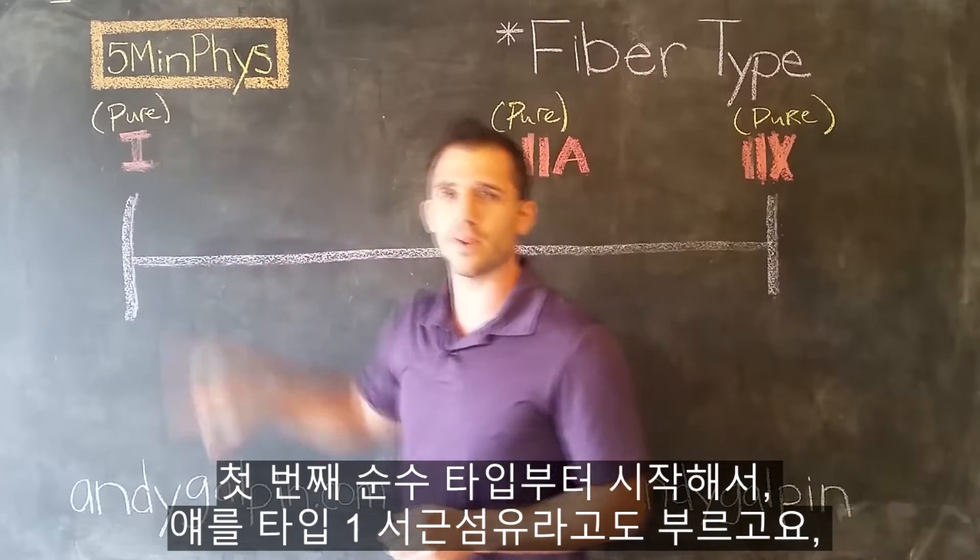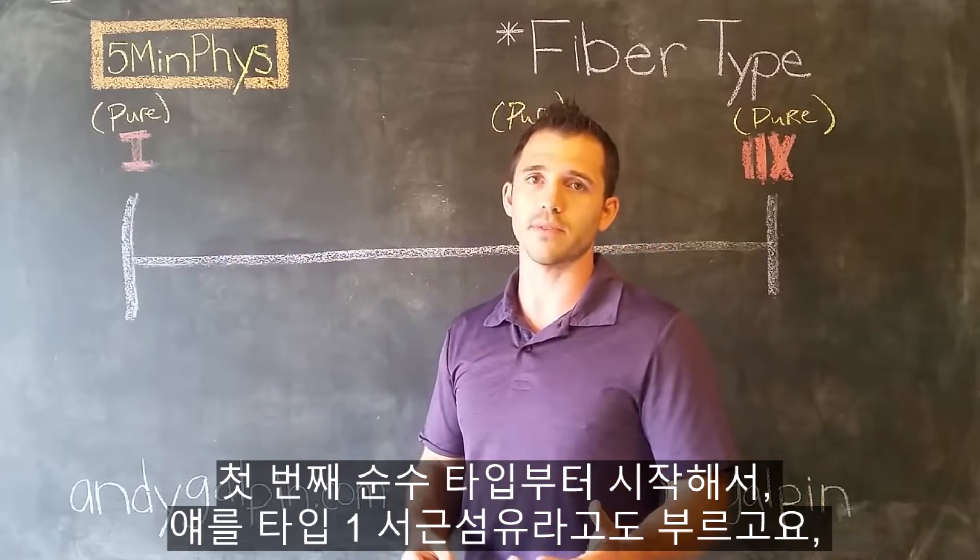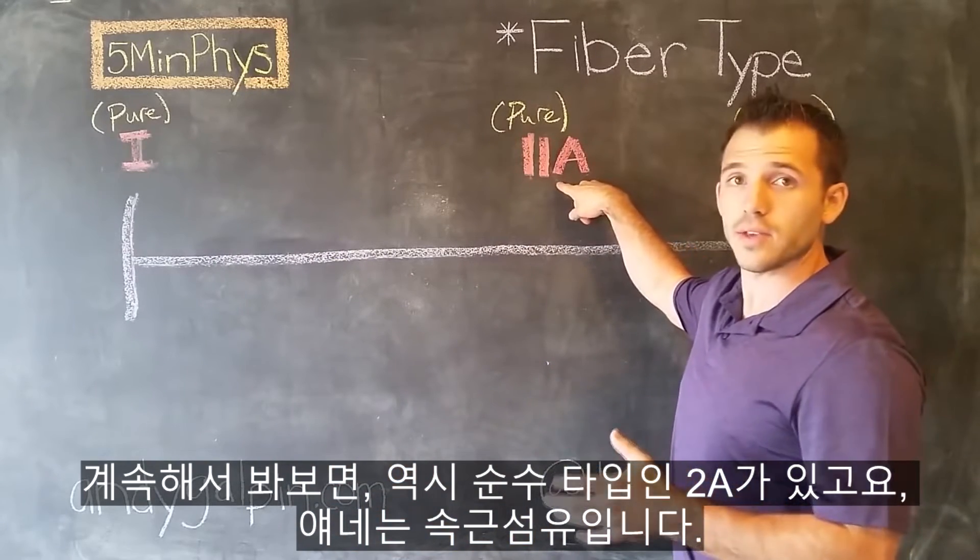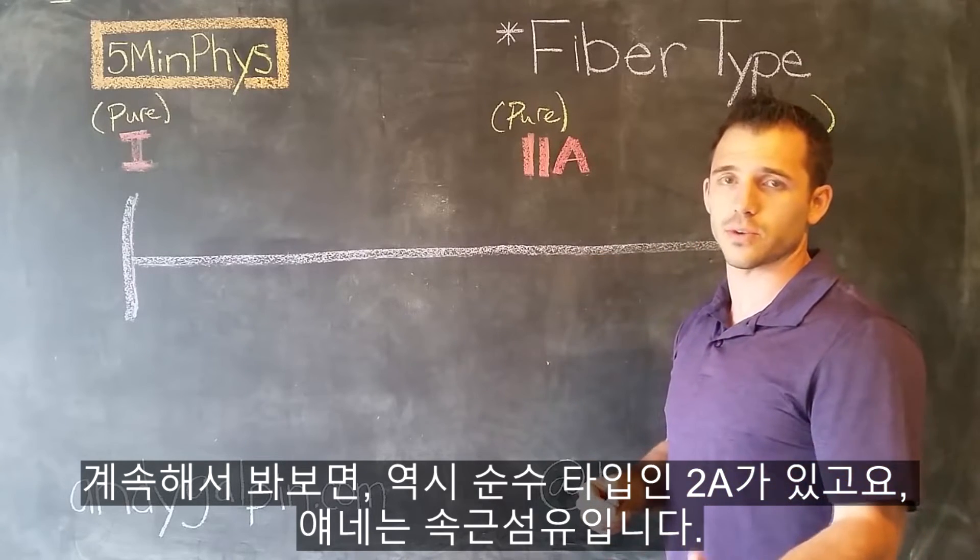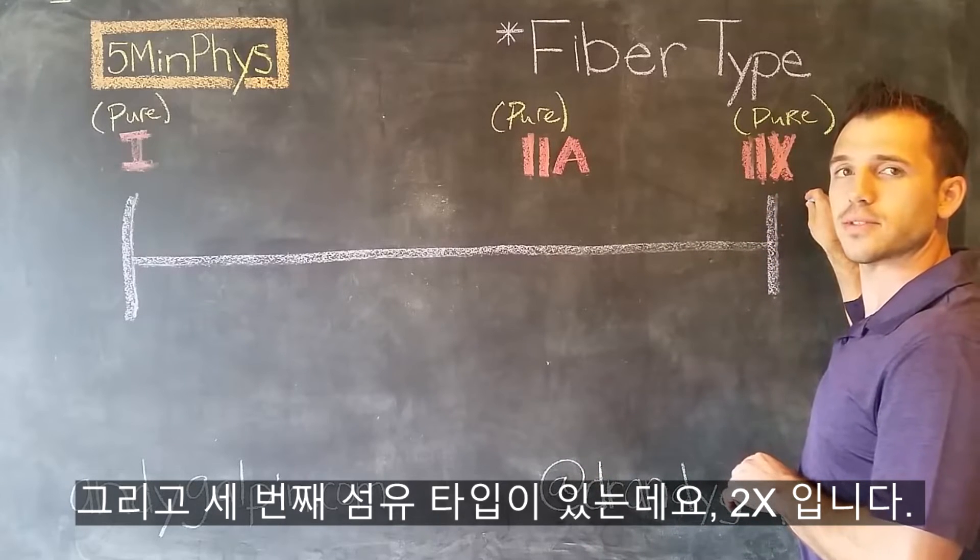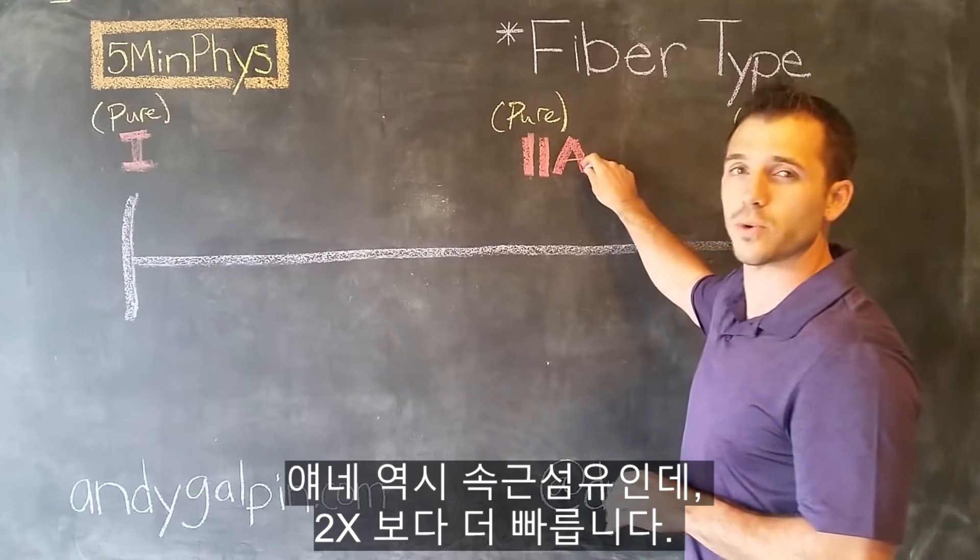Starting over here with your first pure type, or what we call your type ones, or your slow twitch. Moving down our continuum, we see our 2As, which are also pure, but then these are now your fast twitch fibers. Then we have a third fiber type, which are your 2Xs. These are also fast twitch, but these are even more fast twitch than your 2As.